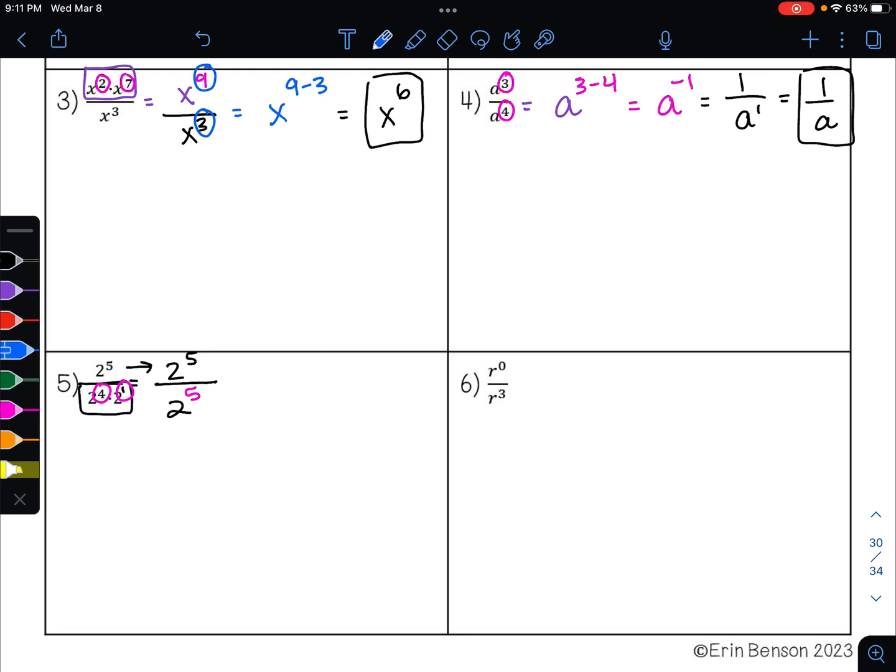To divide like bases, I'm going to keep my base of 2, and I'm going to subtract my exponents. 5 minus 5 is 0. Well, we learned that anything raised to the 0th power is 1. So our answer is 1.